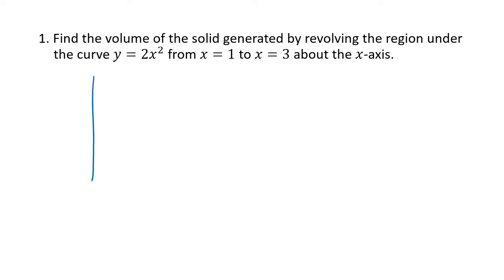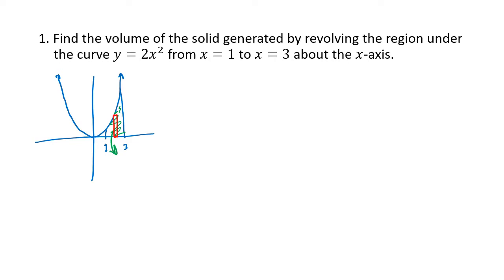So we want to get a sketch of this region. 2x squared looks a lot like y equals x squared, it just rises a little bit more sharply. We're starting at x equals 1, going to x equals 3, and so the region that we're revolving looks like this and then we're spinning that around the x-axis. We want to think about a representative rectangle — a thin vertical slice of this region — and when we spin that slice around the x-axis what we get is a disk. The area of the disk is pi times the radius squared, and we want to do that over and over and add up all the slices to get our volume.